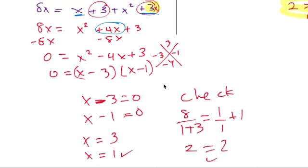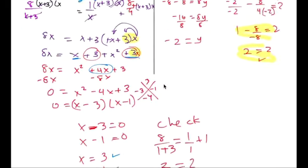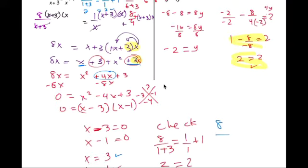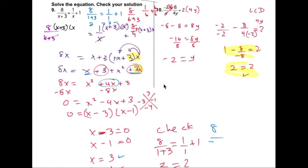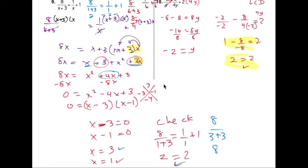And then I checked one, it worked out. Let's check three. Three, it's eight over three plus three, which is six, right? So eight over six. Does that equal to one?